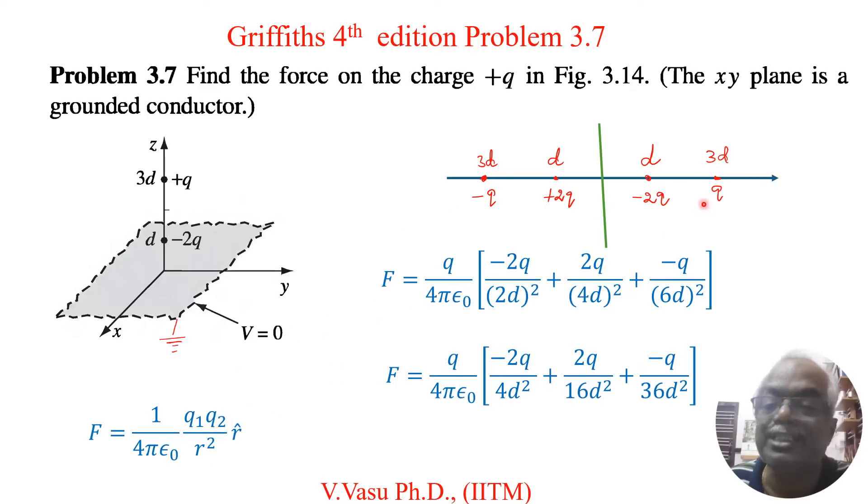Here we can take this charge Q. So you can take Q outside as a common given by 4 pi epsilon naught. And then the force due to the charge minus 2Q on this. So now the distance between charge minus 2Q to Q is 2d. So this will become minus 2Q.